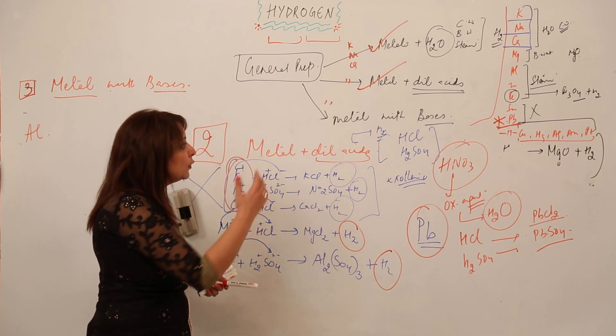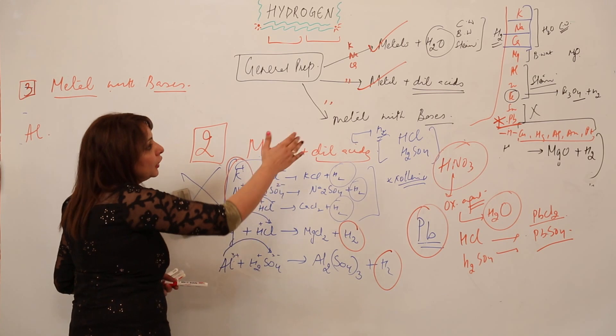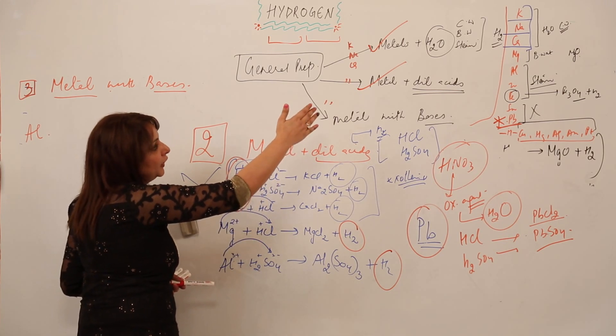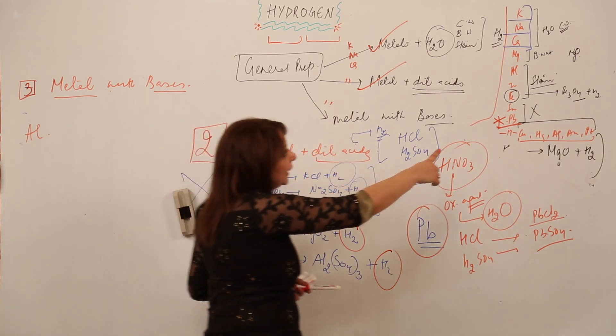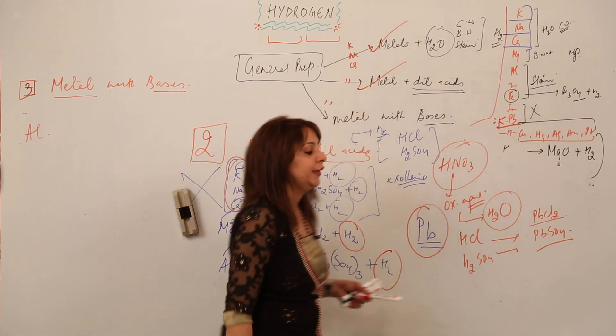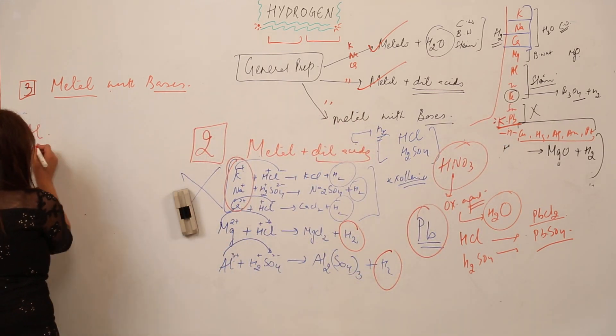We can take the metals which occur below in the reactivity series, like starting from magnesium. The third metal I am taking as an example is aluminum.